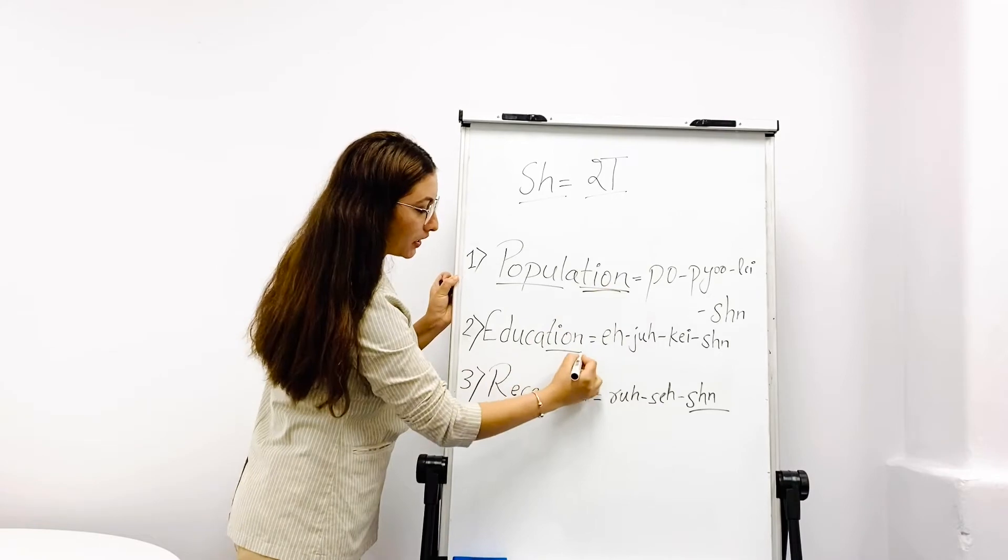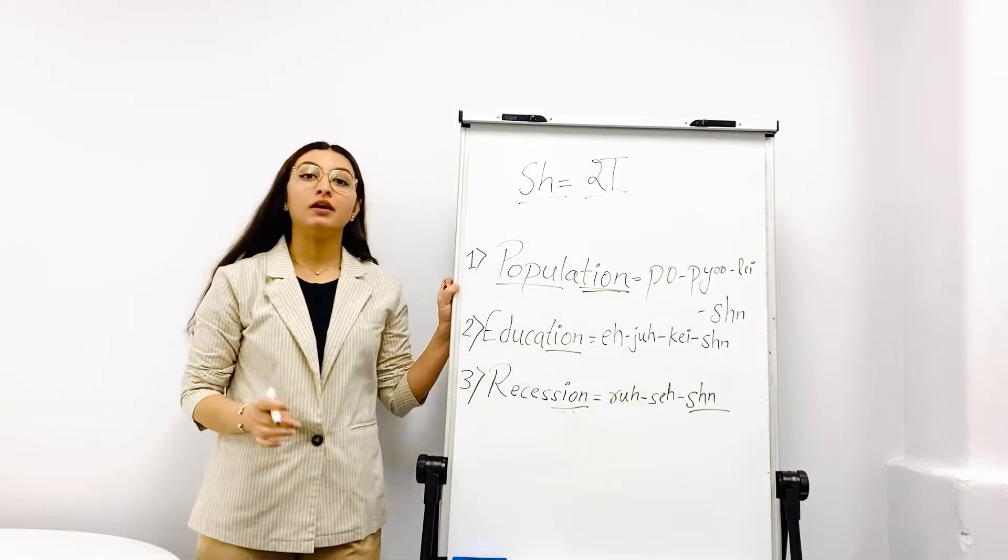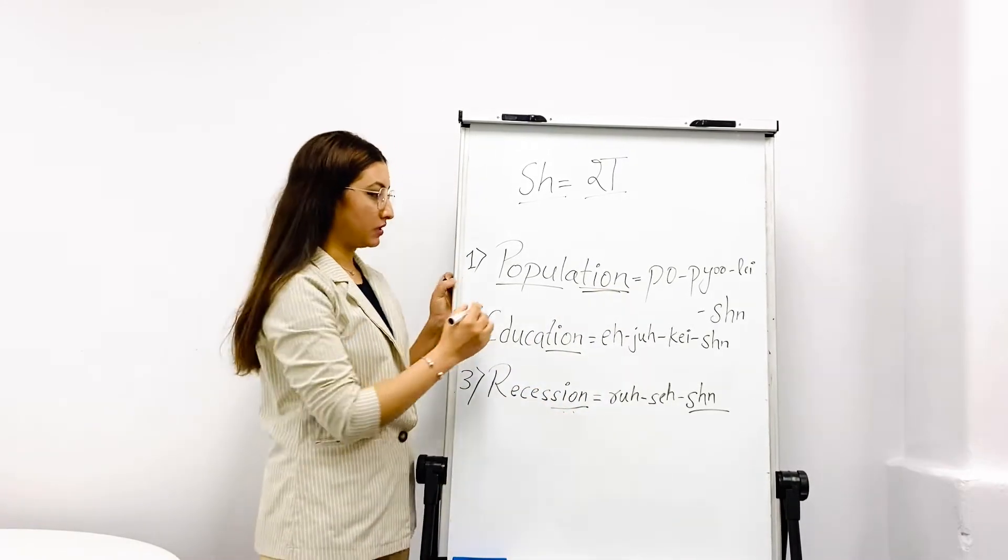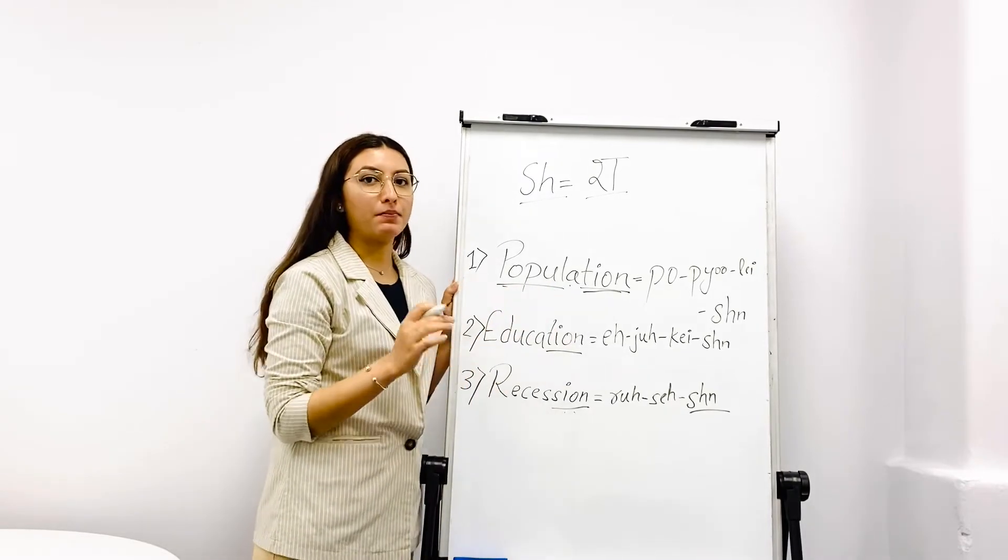Now let's look at tion and sion endings, which are pronounced with the SH sound. For example, population.